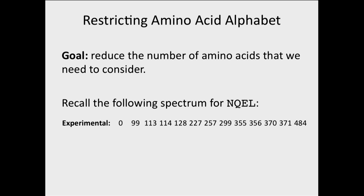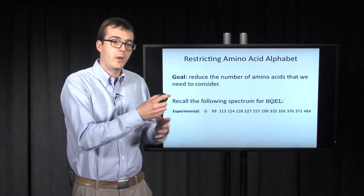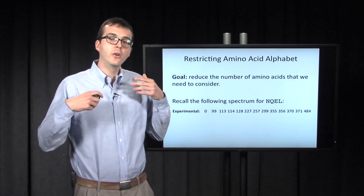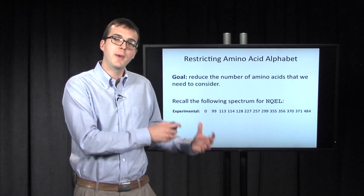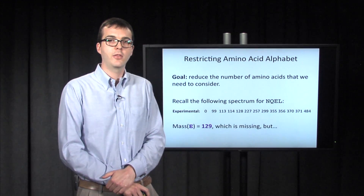Let's recall the hypothetical experimental spectrum we had and just see what we notice about it. This is a great problem-solving strategy: if you're stuck on a solution, one of the most common things to do is consider a small example, and look and see what that small example is telling you and see if it maybe generalizes. Here's our small example — it's just going to be for a peptide of length 4.